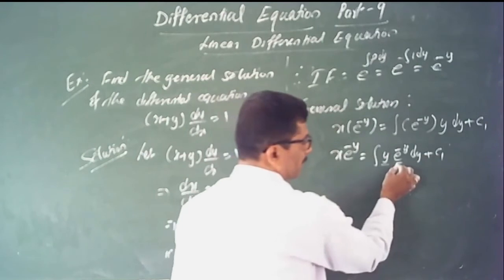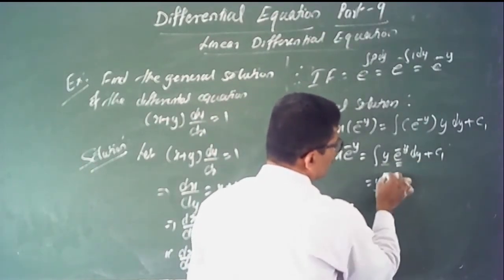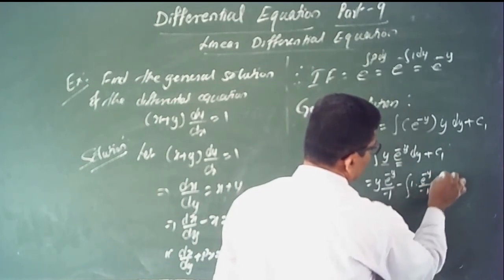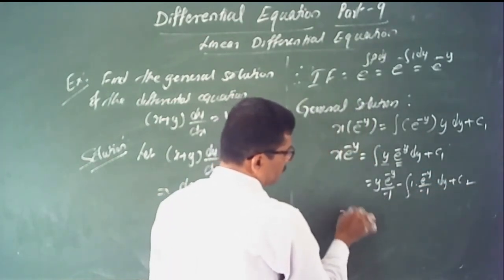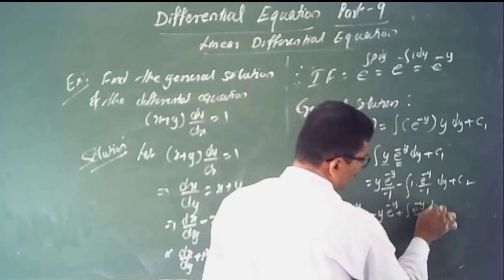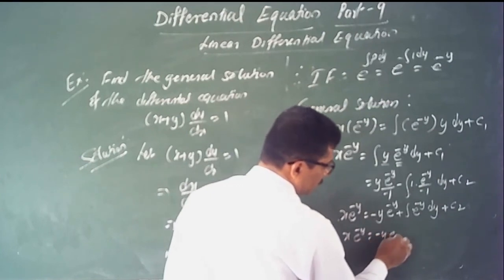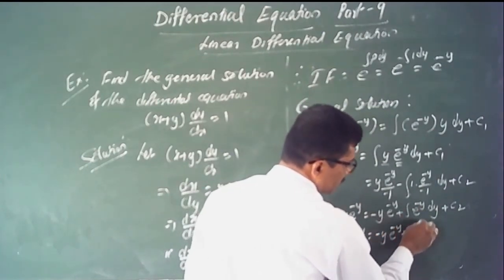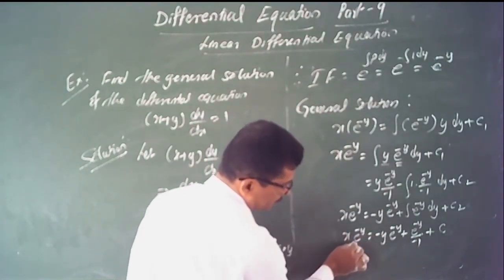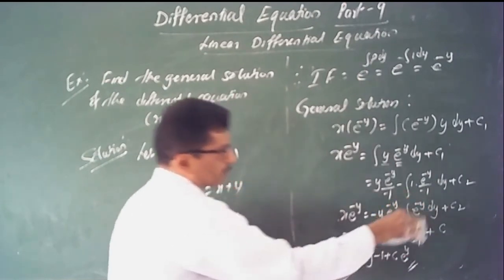Using integration by parts: x times e to the minus y equals y times (e to the minus y divided by minus 1) minus the integral of 1 times (e to the minus y over minus 1) dy plus constant. Simplifying: x times e to the minus y equals minus y times e to the minus y plus the integral of e to the minus y, which gives e to the minus y divided by minus 1, plus constant.